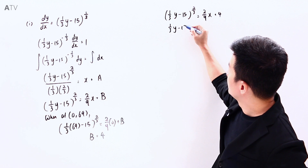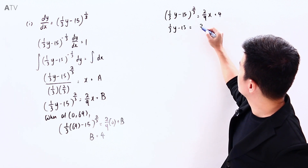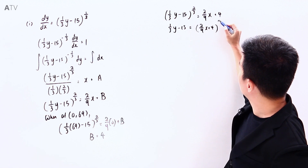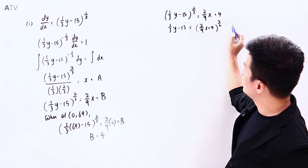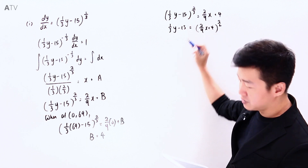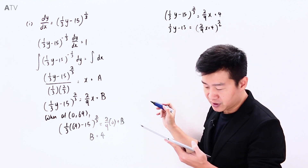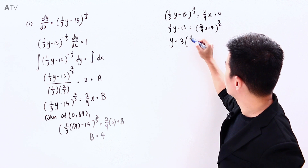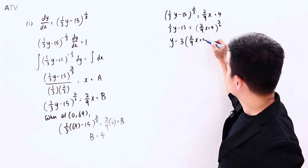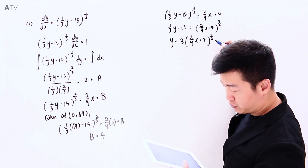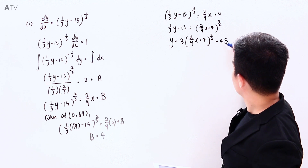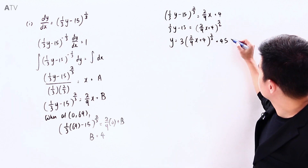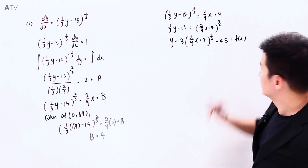Moving the 15 over: 1/3y minus 15 equals (2/9 x + 4)^(3/2), then plus 15. Then multiplying 3 across to the other side gives y equals 3 times (2/9 x + 4)^(3/2) plus 45. And this is f(x).